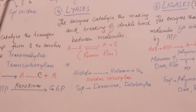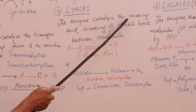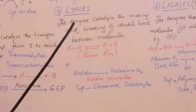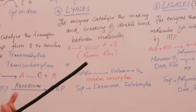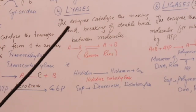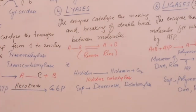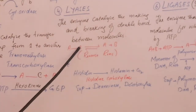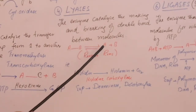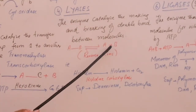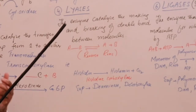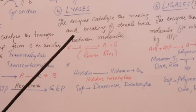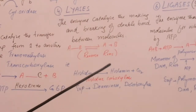The fourth group is lyases. These enzymes catalyze the making and breaking of double bonds between molecules. Adding or removing certain groups creates or breaks double bonds. For example, a lyase enzyme can break a double bond within a molecule, producing two different molecules — such as breaking ethene's double bond to form a new molecule.